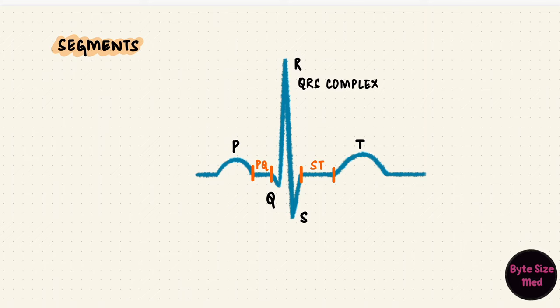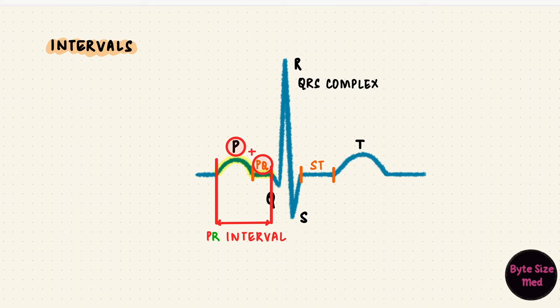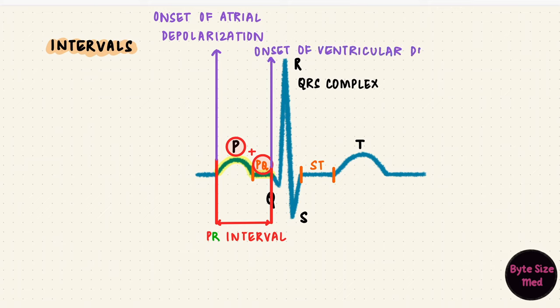So we looked at the waves and the segments in between. The last thing is intervals. An interval includes a wave and a segment. First up, the PQ interval. Since the Q wave sometimes isn't visible, it's more commonly known as the PR interval. The PQ segment can also be labeled as the PR segment. This PR interval starts from the beginning of the P wave up to the beginning of the Q wave. So it includes the P wave and the PR segment. That's from the start of atrial depolarization to the start of ventricular depolarization. So it's conduction from the sinoatrial node through the atria and to the ventricles. So this PR interval would include that delay that happens at the atrial ventricular node during conduction between the chambers.